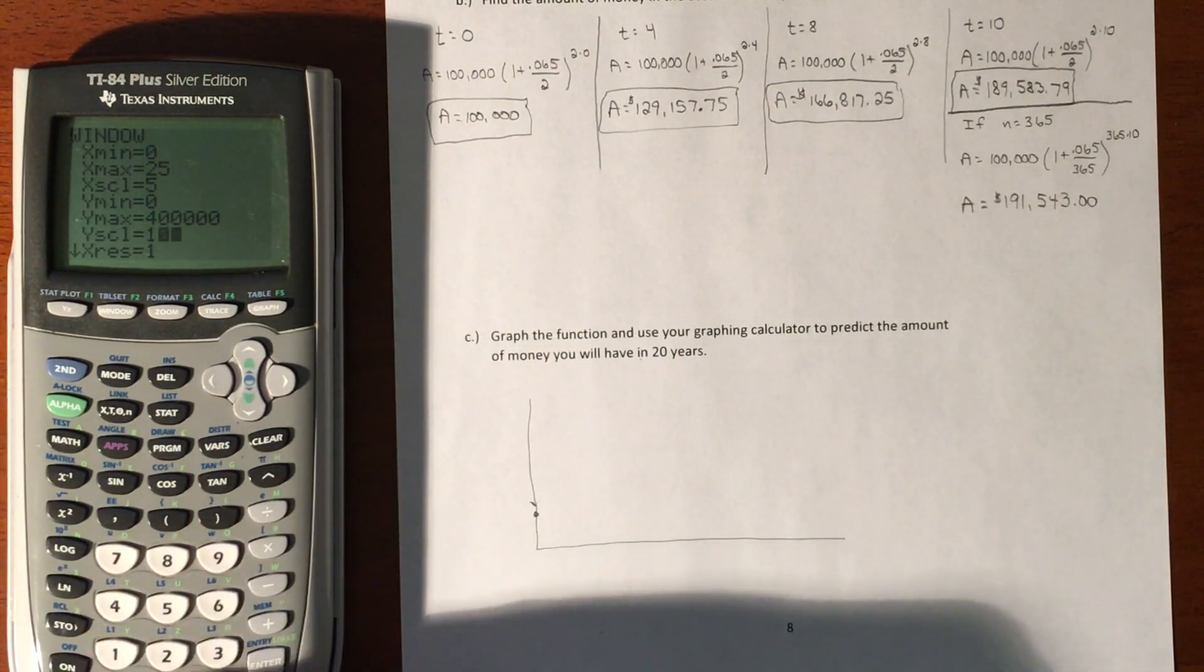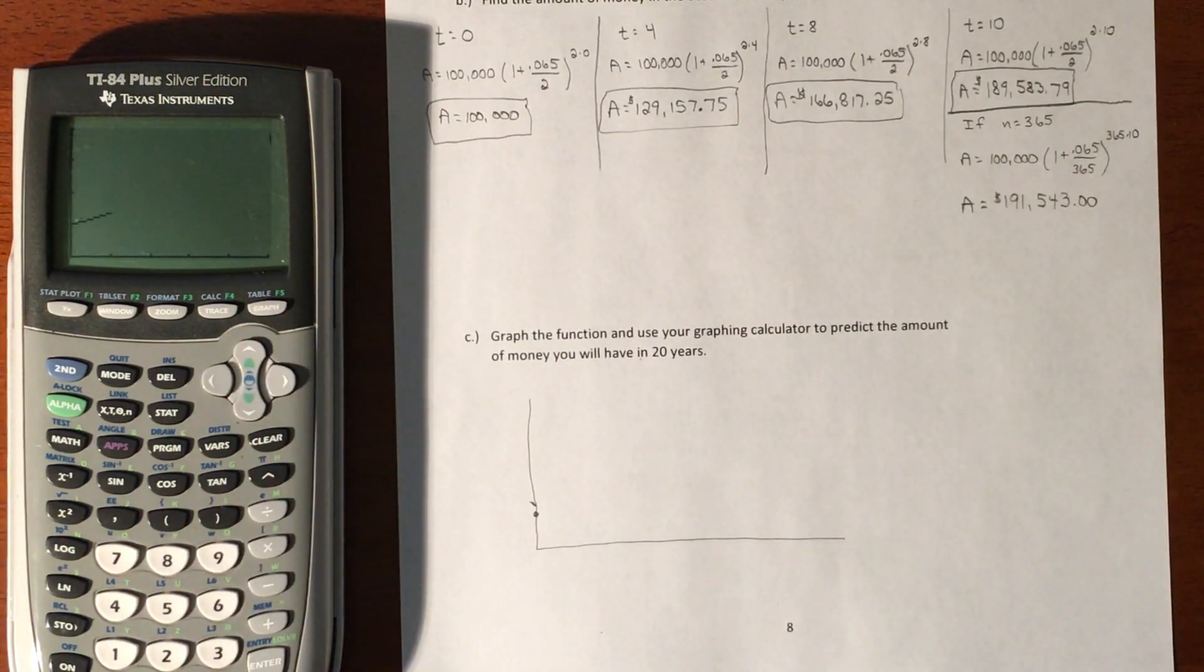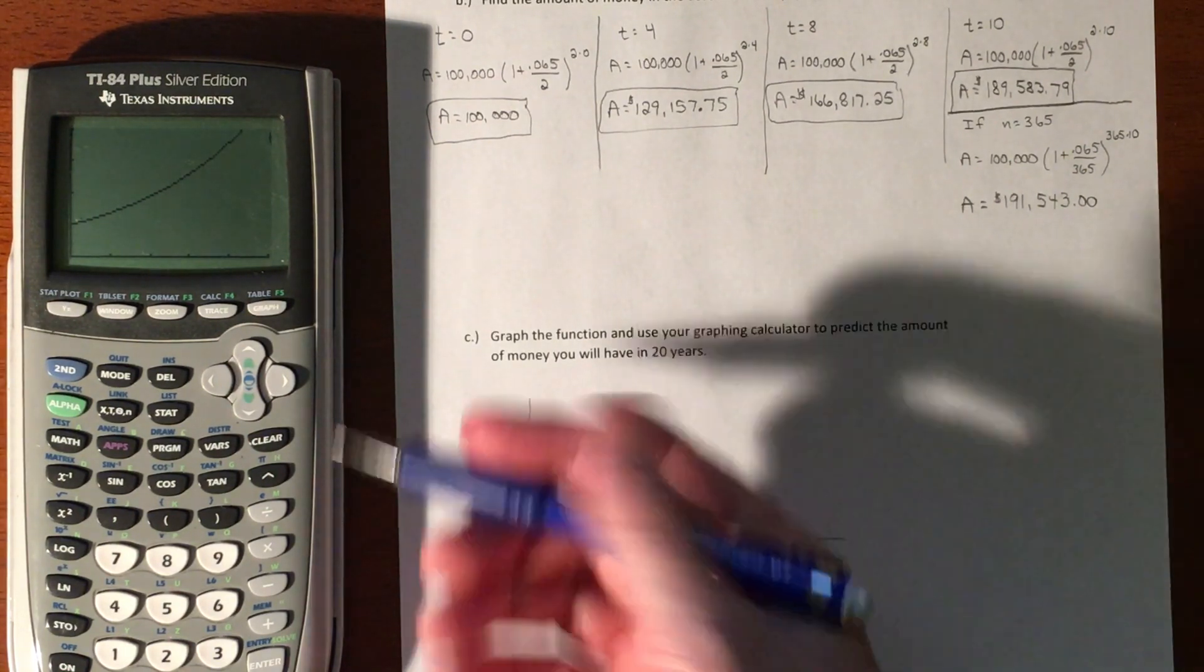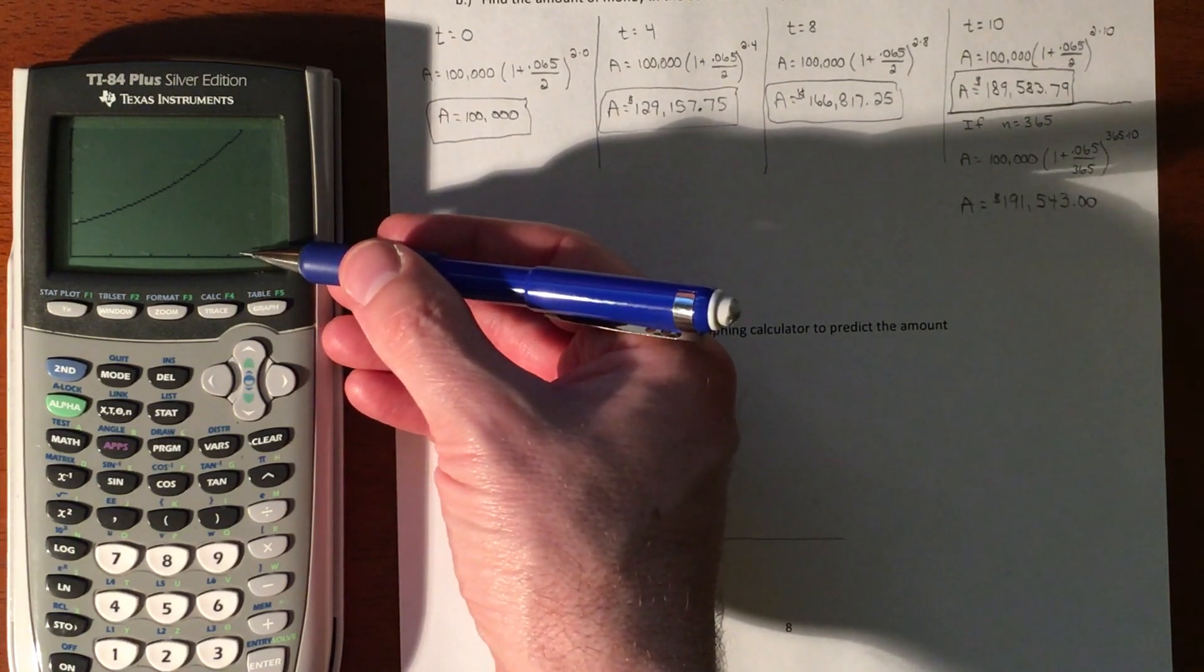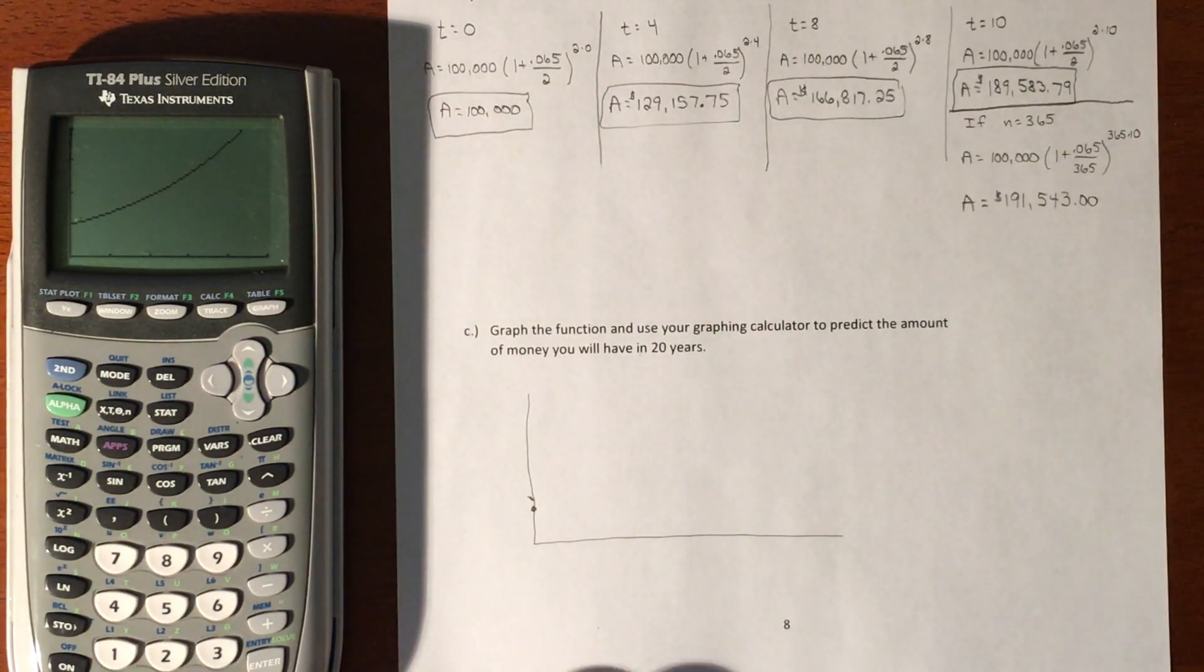Let's see what our graph looks like. There is our exponential growth. At 20 years, which would be this tally mark right here, we're somewhere out here. I'll make a prediction of what this value might be.